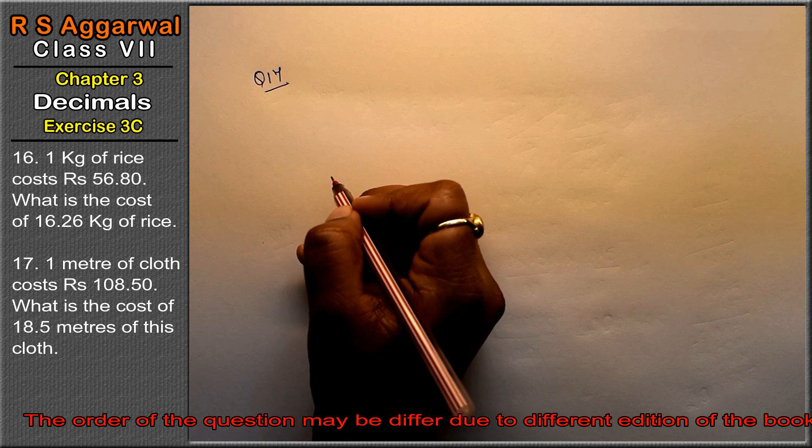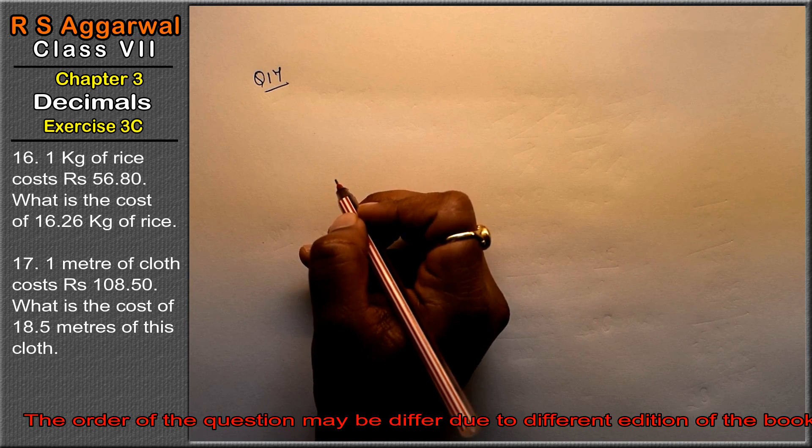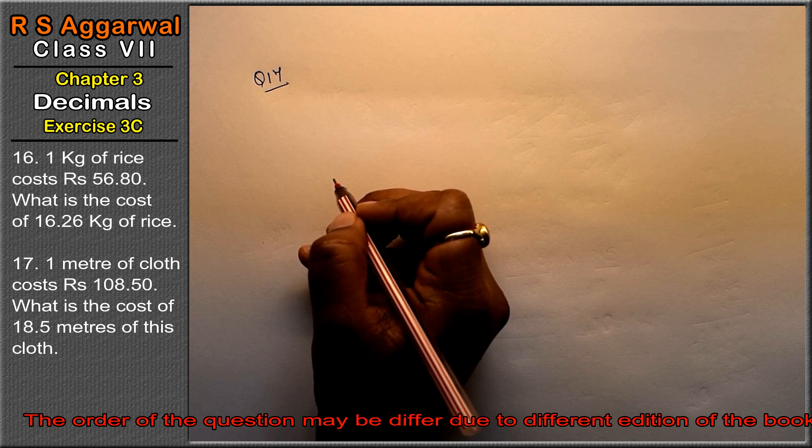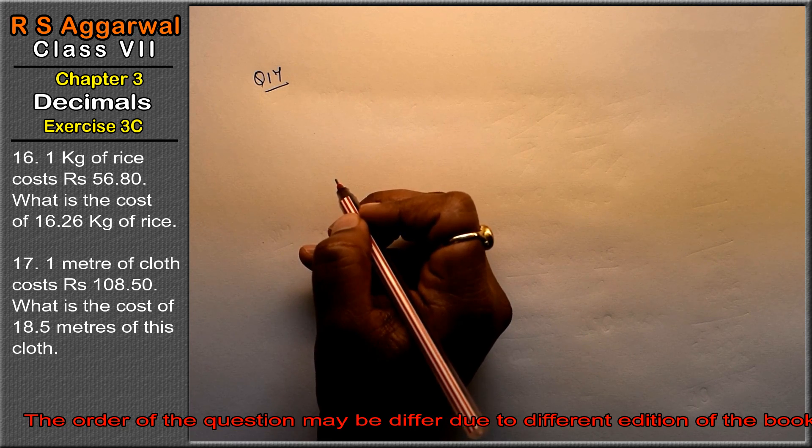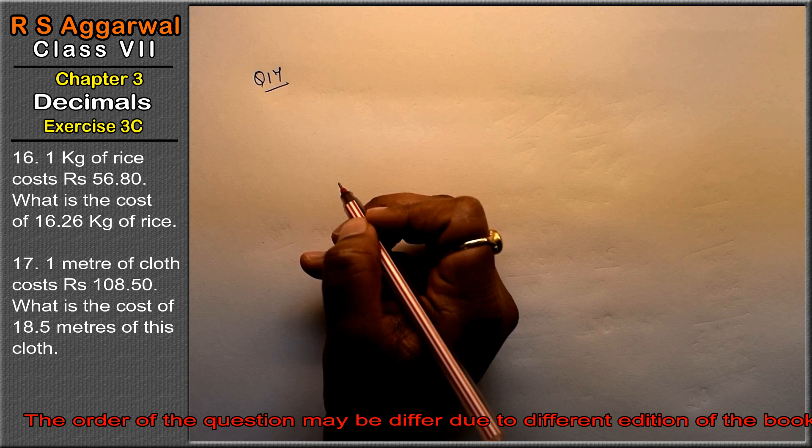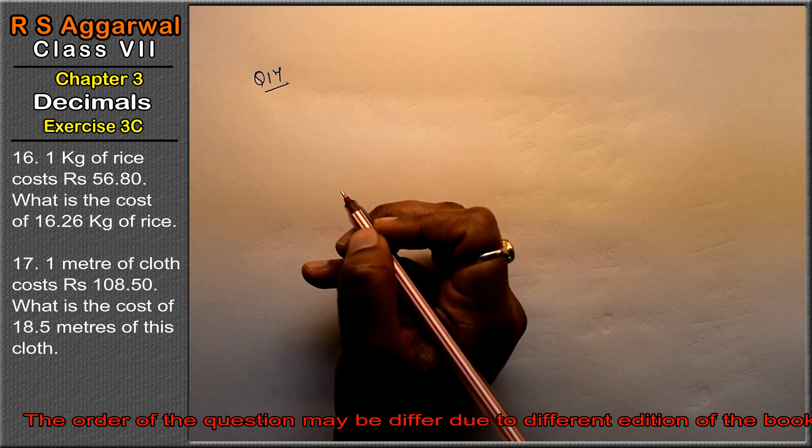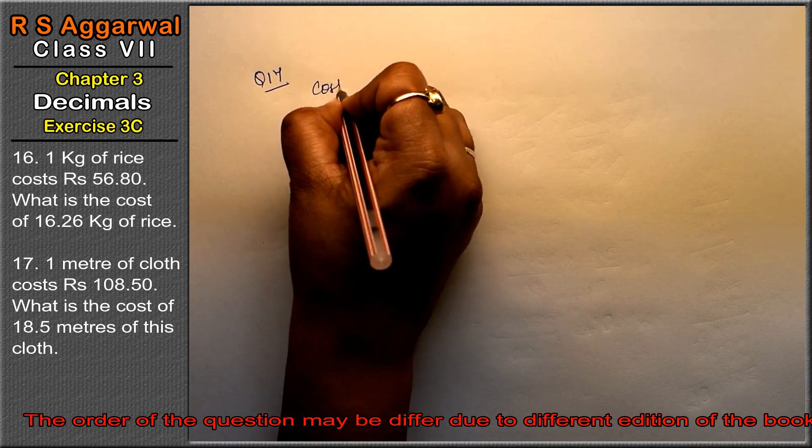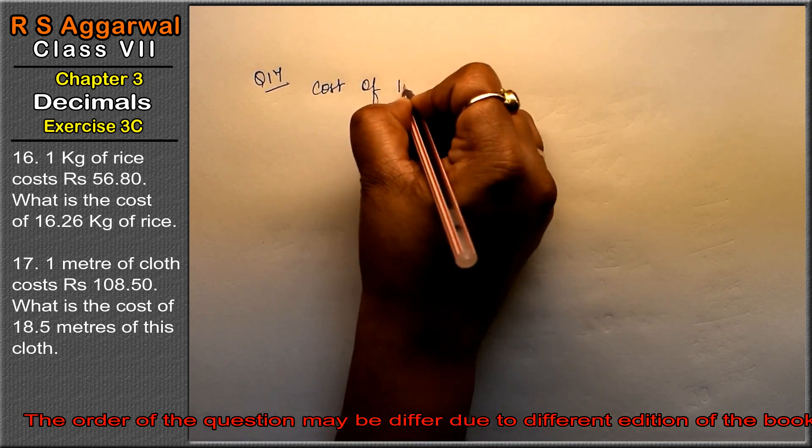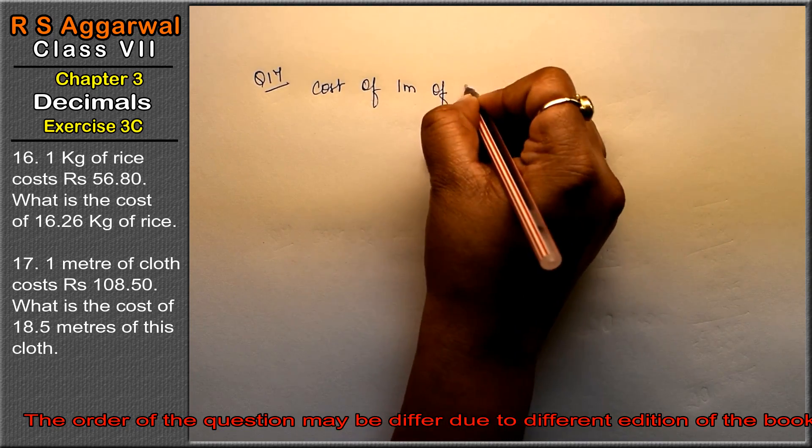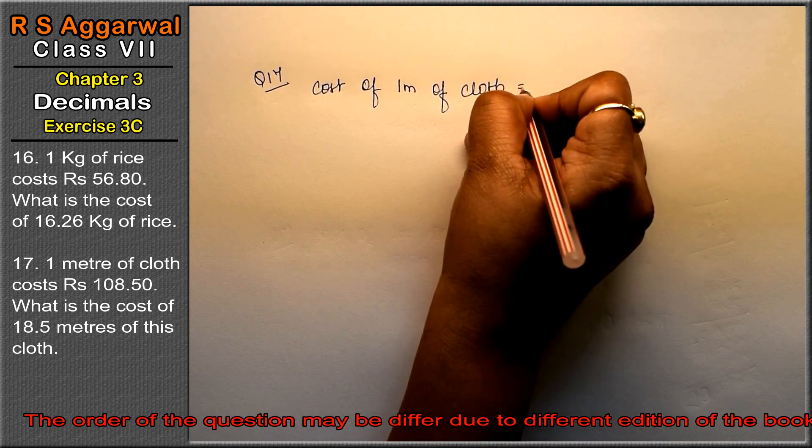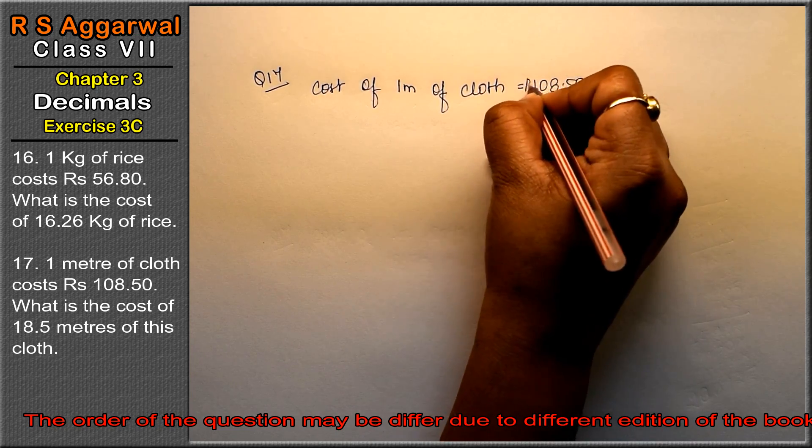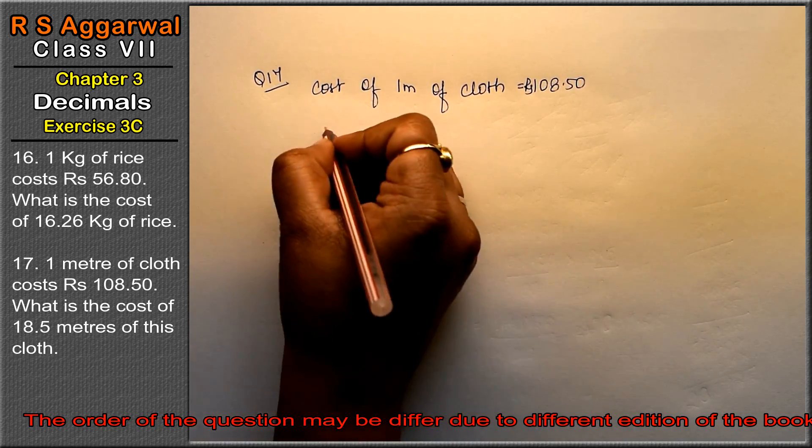Let's do question number 17 of exercise 3C, that is decimals. Question number 17 is: 1 meter of cloth costs rupees 108.50. What is the cost of 18.5 meters of this cloth?